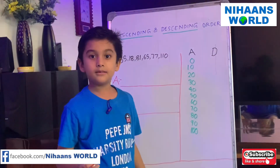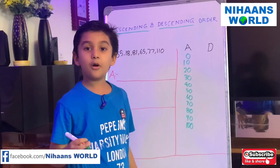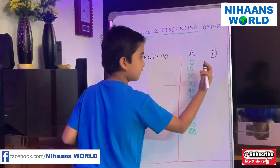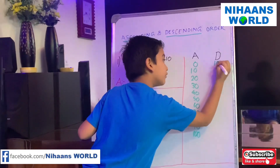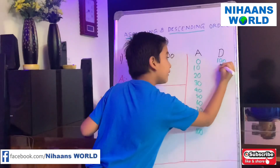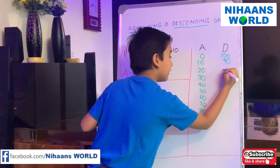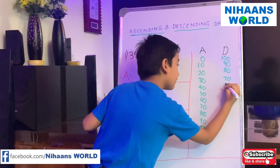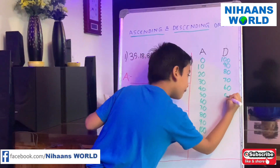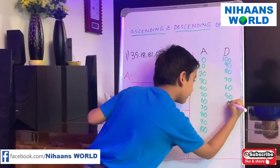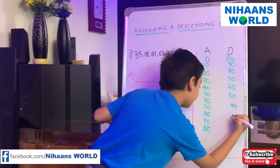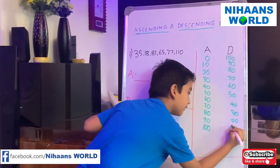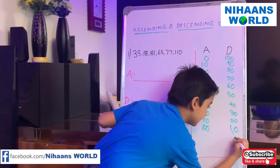Now the descending order is from 100 to 0. Let us write it: 100, 90, 80, 70, 60, 50, 40, 30, 20, 10, 0.